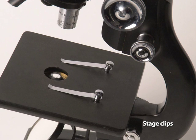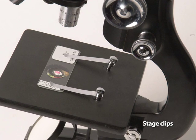Stage clips are often used on stereo or simple compound microscopes to hold a microscope slide on the stage and yet allow you to move it manually.